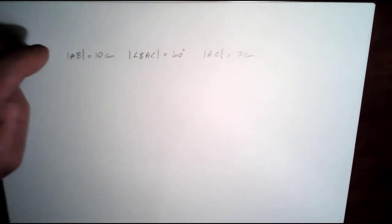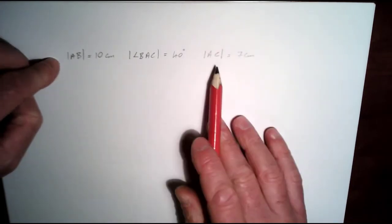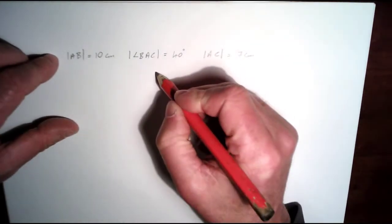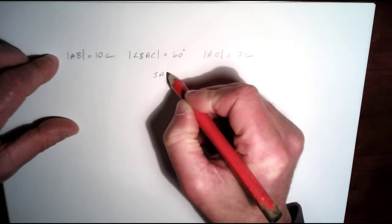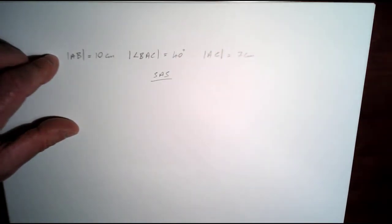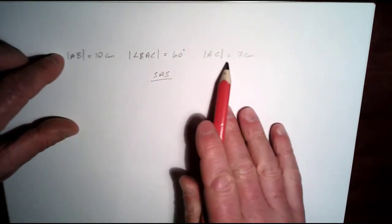So this is a triangle where you have two sides and an angle in between them. This is, if you like, S-A-S, side angle side. We have a side, an angle between them, and another side.